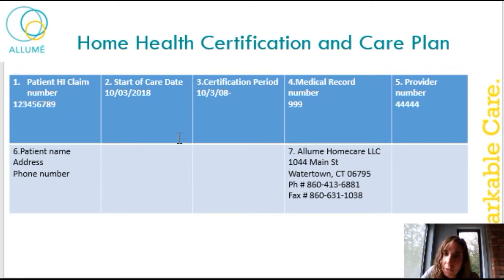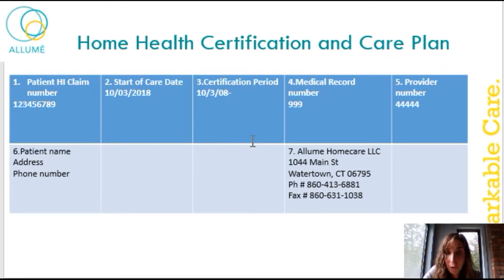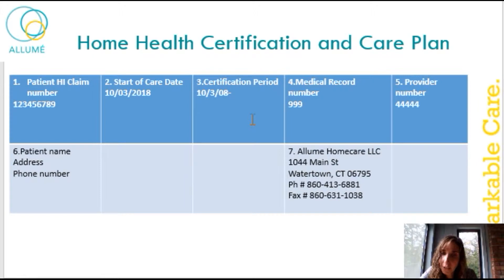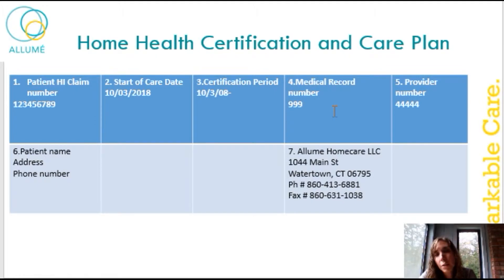Number three is the certification period, which is very, very important. You want to make sure that you are following the care plan within the right time period, so make sure that you're checking that. Number four is the medical record number. Number five is the provider number. Number six is the patient's name, address, and phone number.